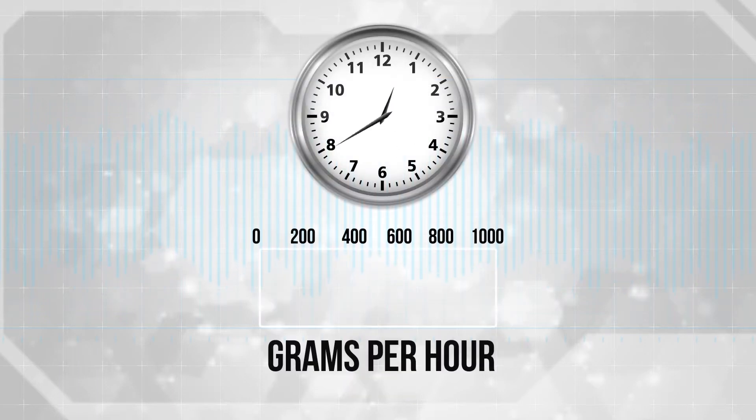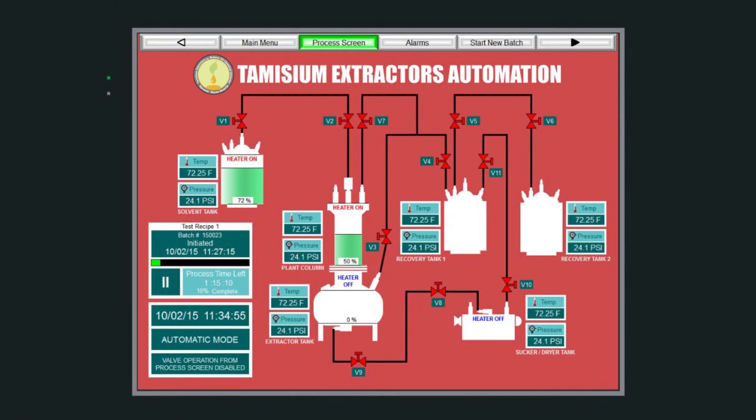The TE-12000 can produce up to 200 grams of targeted extractions per hour of operation and the process can be fully automated.